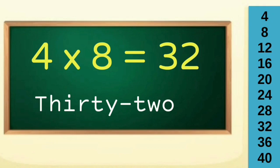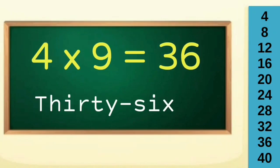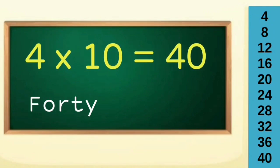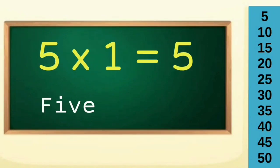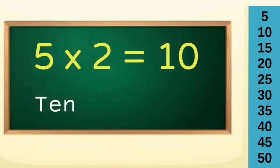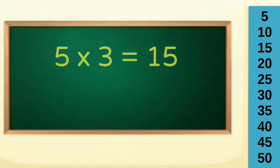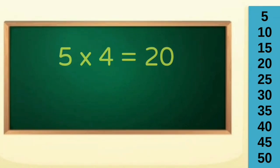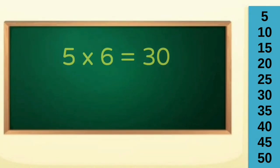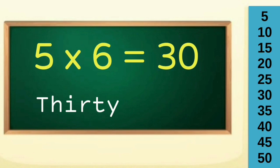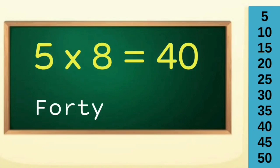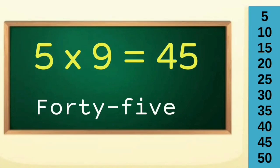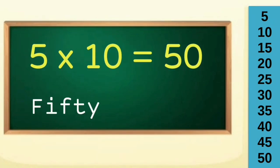Four eights are thirty-two, four nines are thirty-six, four tens are forty. Table of five: five ones are five, five twos are ten, five threes are fifteen, five fours are twenty, five fives are twenty-five, five sixes are thirty, five sevens are thirty-five, five eights are forty, five nines are forty-five, five tens are fifty.